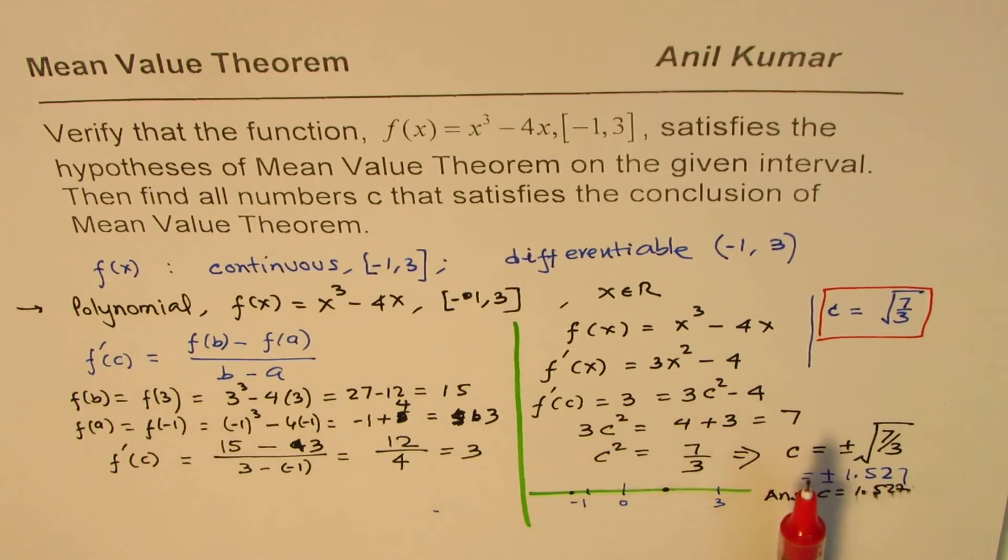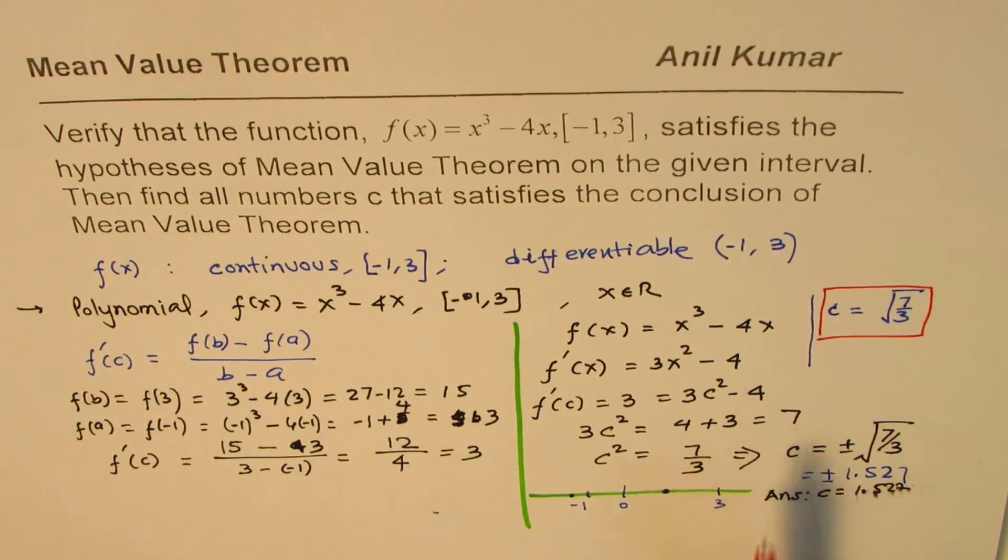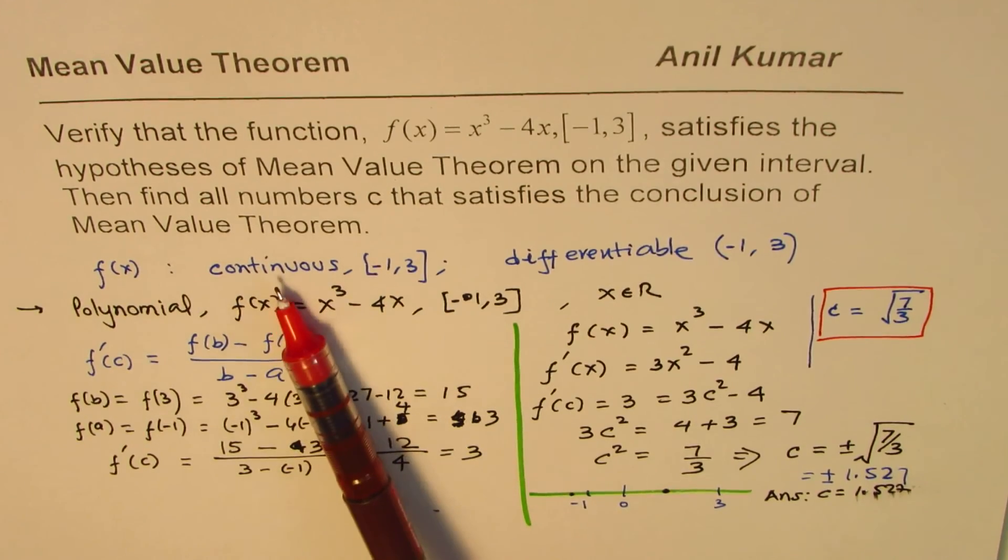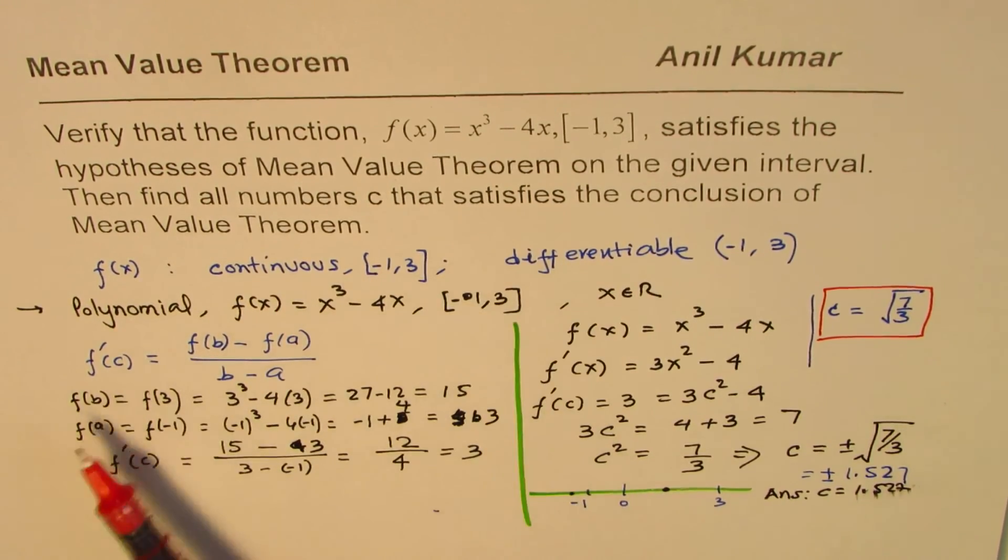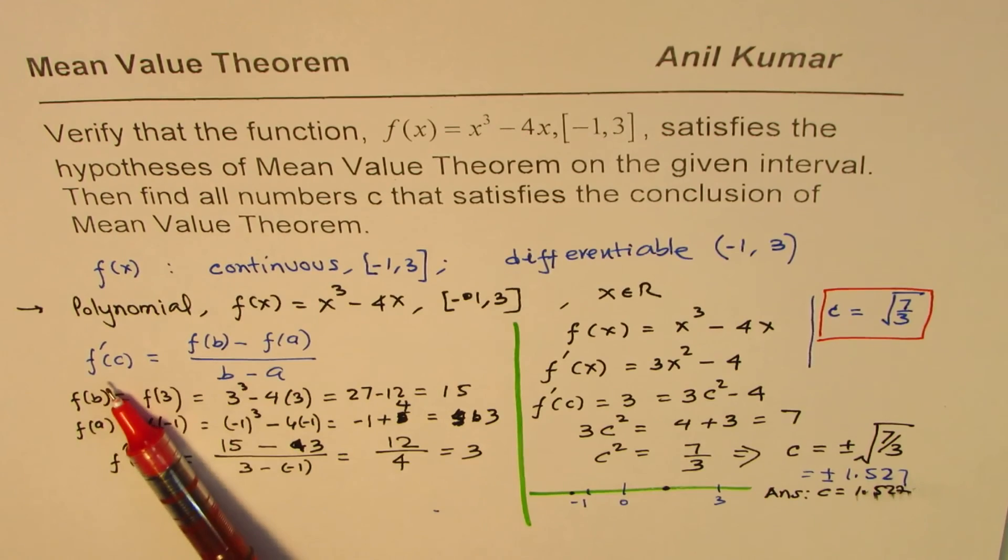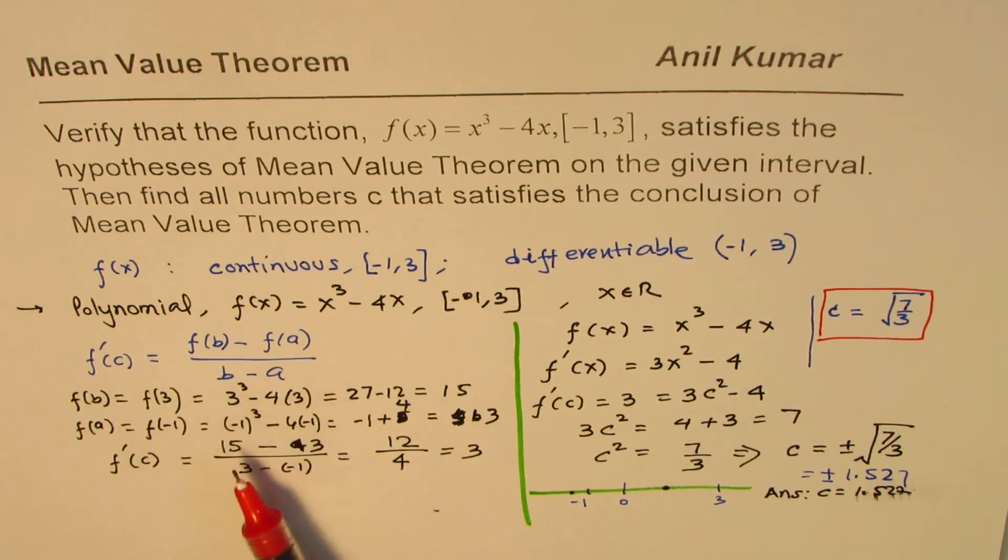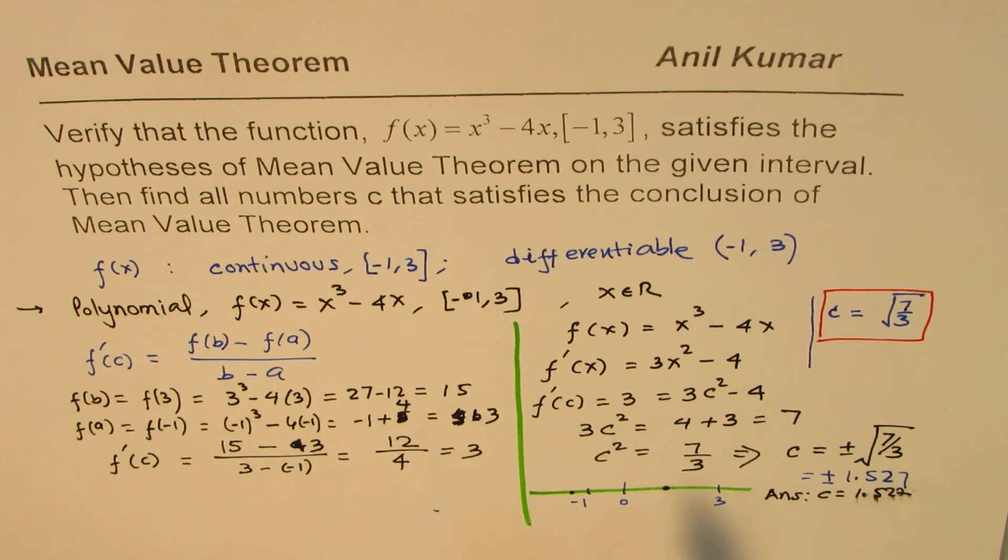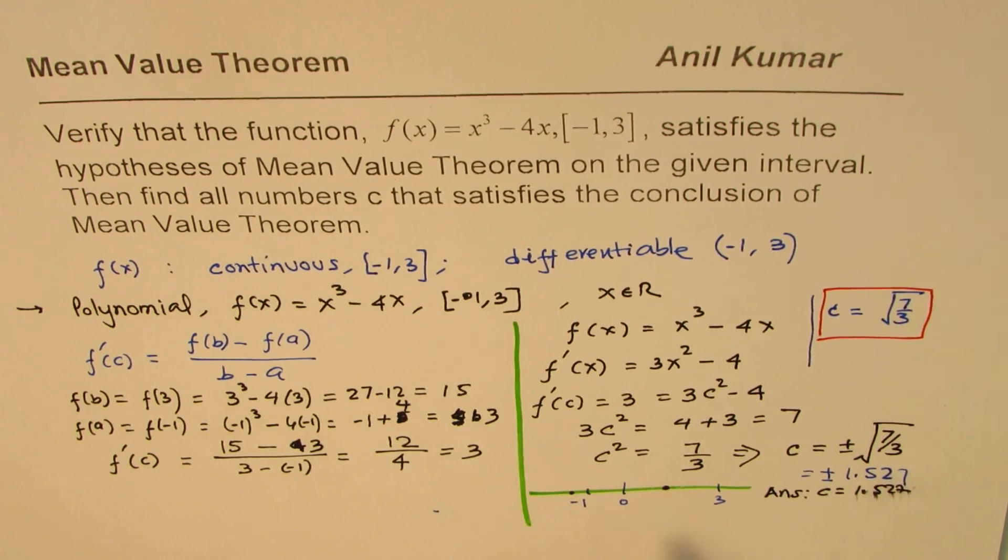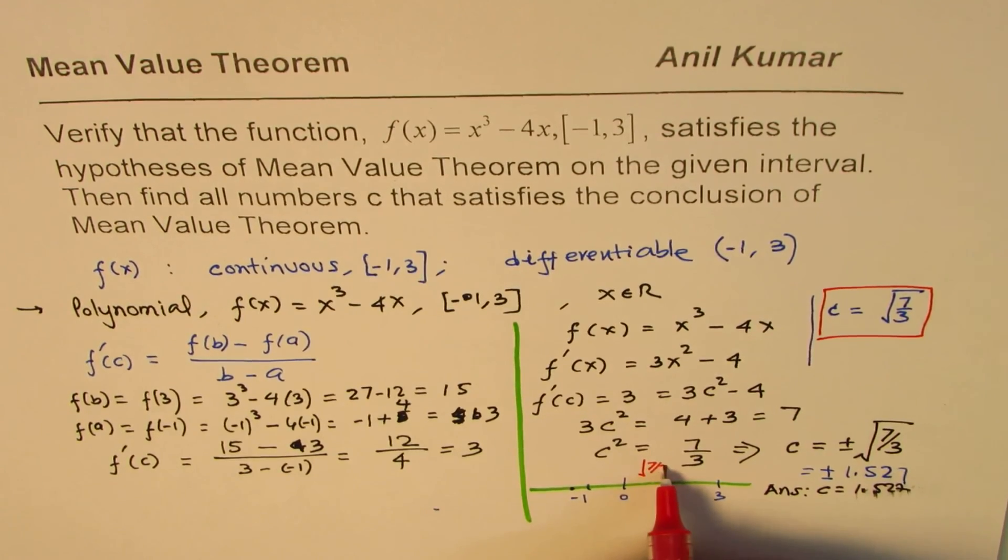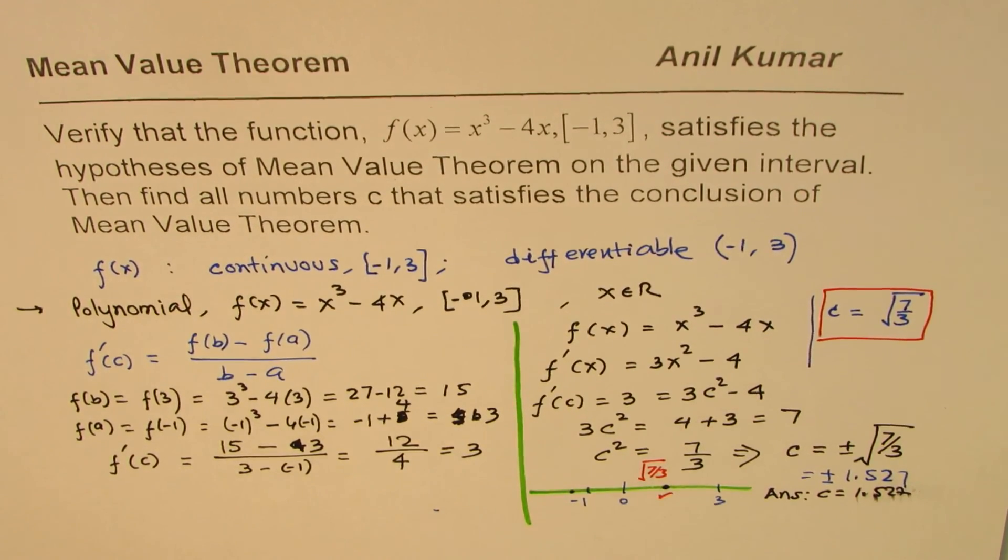So, I hope you understand how we figure it out. So, one, we prove that the conditions are met. The function is continuous and differentiable, and then you find the derivative equated to the difference quotient. And once you do that, you can calculate the value of c. Once you calculate, it is important to check which one is within the given interval, and that's the right answer.